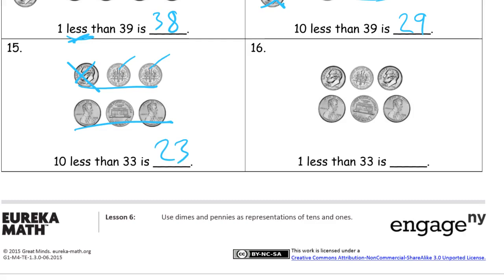And one less than thirty-three. I've got dimes here and pennies here. One less means I'm going to cross out a penny instead of a dime and see what I have left. I've got ten, twenty, thirty, thirty-one, thirty-two. Thirty-two.